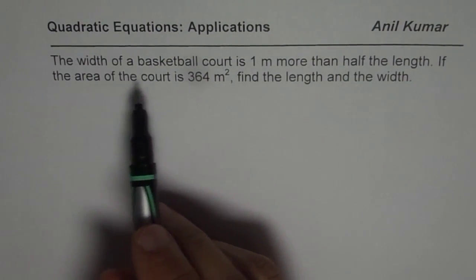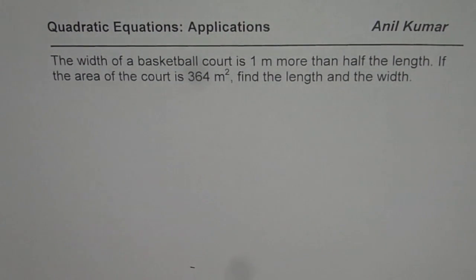The width of a basketball court is 1 meter more than half the length. If the area of the court is 364 meters square,